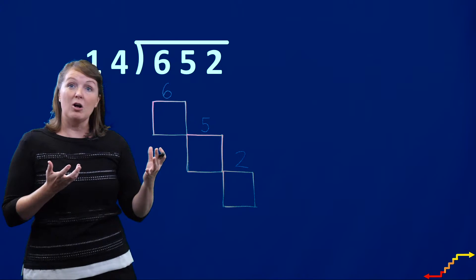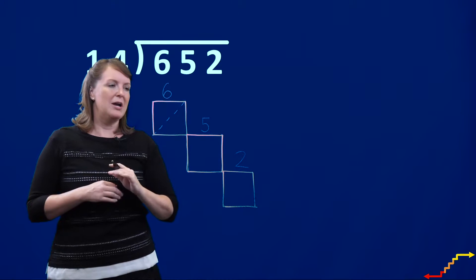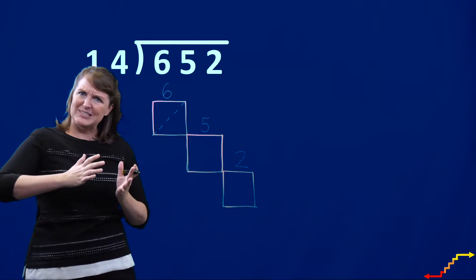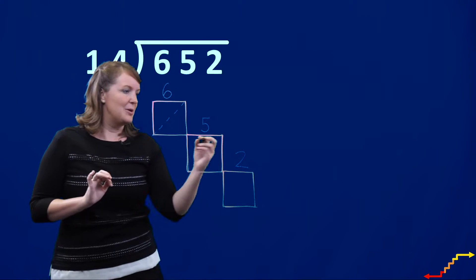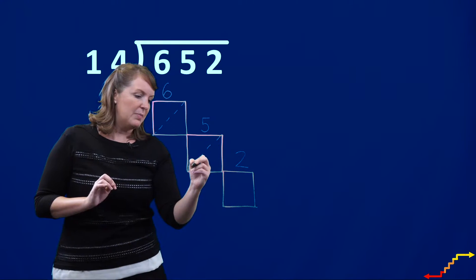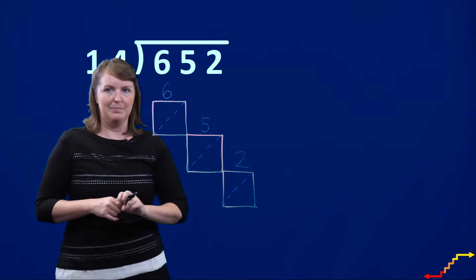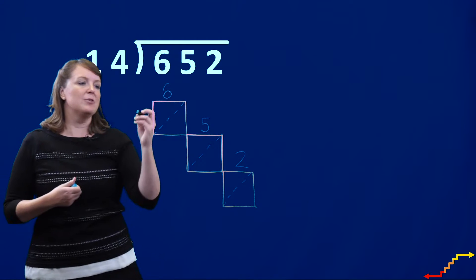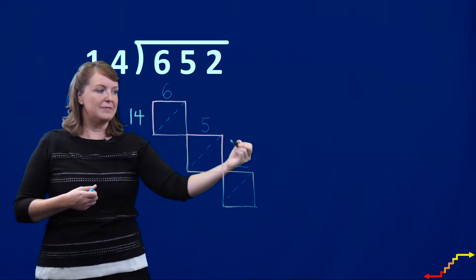And I also need to draw in my lattices. Each lattice goes from the top right-hand corner to the bottom left-hand corner. With multiplication sometimes you'll extend that lattice outward, but there's really no need to do that here with lattice division. So top right-hand corner to bottom left-hand corner. Now I am figuring out how many groups of 14 I can make with 652.